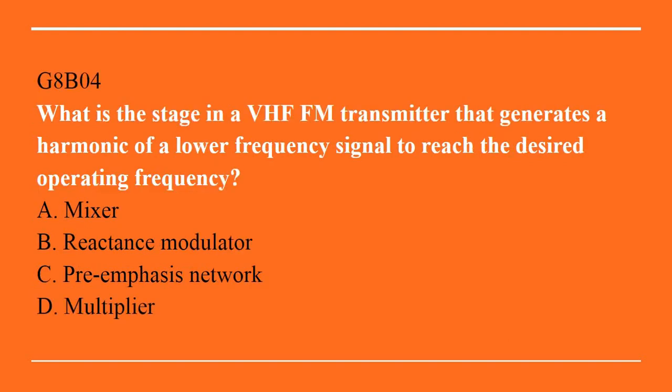G8B04: What is the stage in a VHF FM transmitter that generates a harmonic on a lower frequency signal to reach the desired operating frequency? A. Mixer. B. Reactance modulator. C. Pre-emphasis network. D. Multiplier. Answer is D. Multiplier.